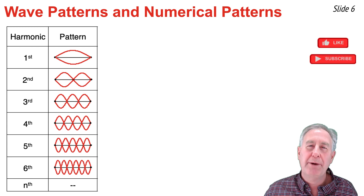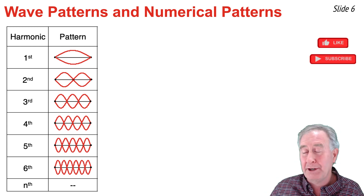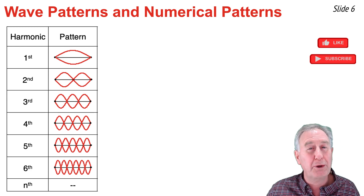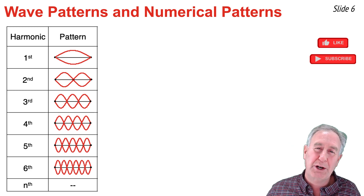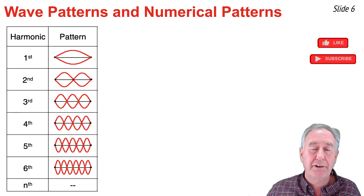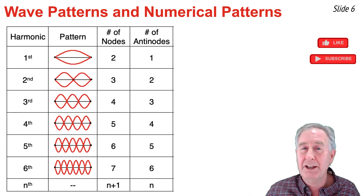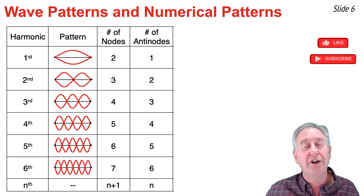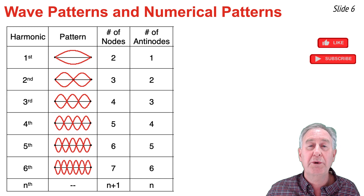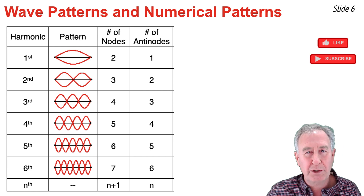When it comes to the harmonics of strings, ropes, and wires, there are not only clear wave patterns but also clear numerical patterns. We have seen the wave pattern for the first, second, and third harmonic, and what we observed was that the number of antinodes in the pattern is equal to the harmonic number. So for the fourth, fifth, and sixth harmonic, we would expect there to be four, five, and six antinodes, and one additional node in each of those patterns.